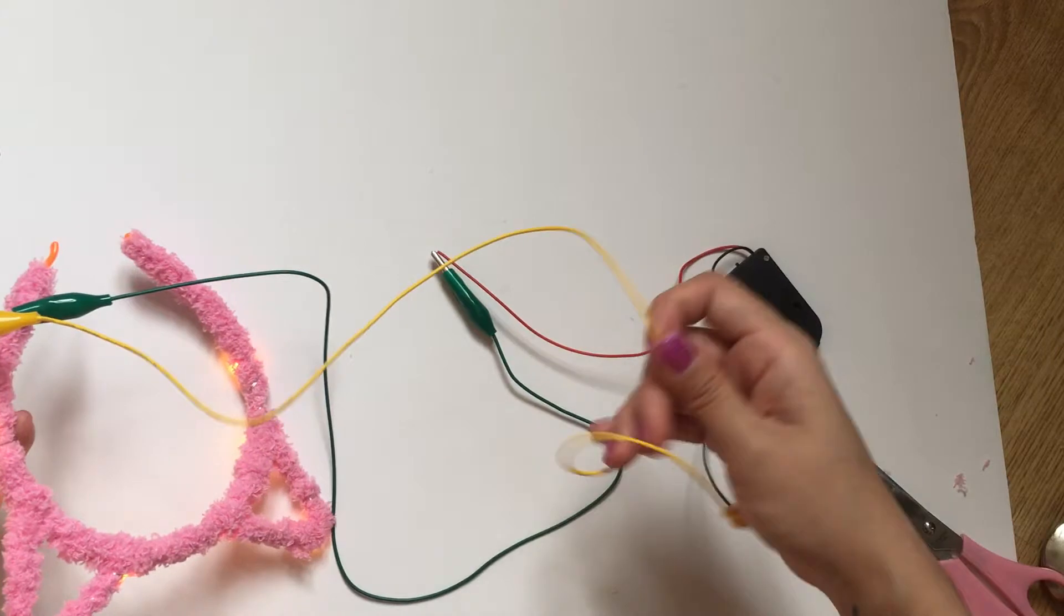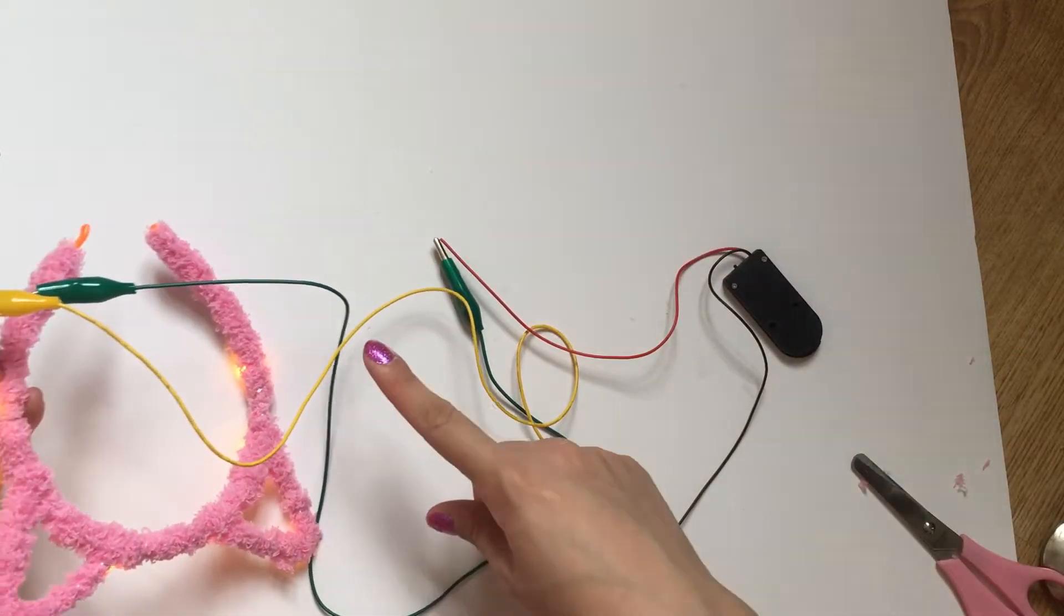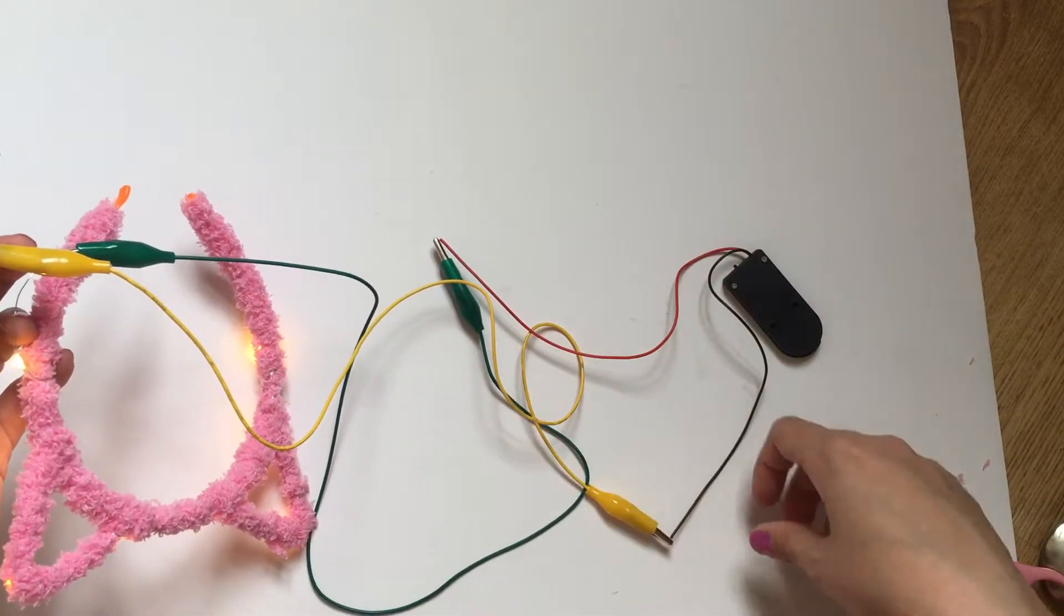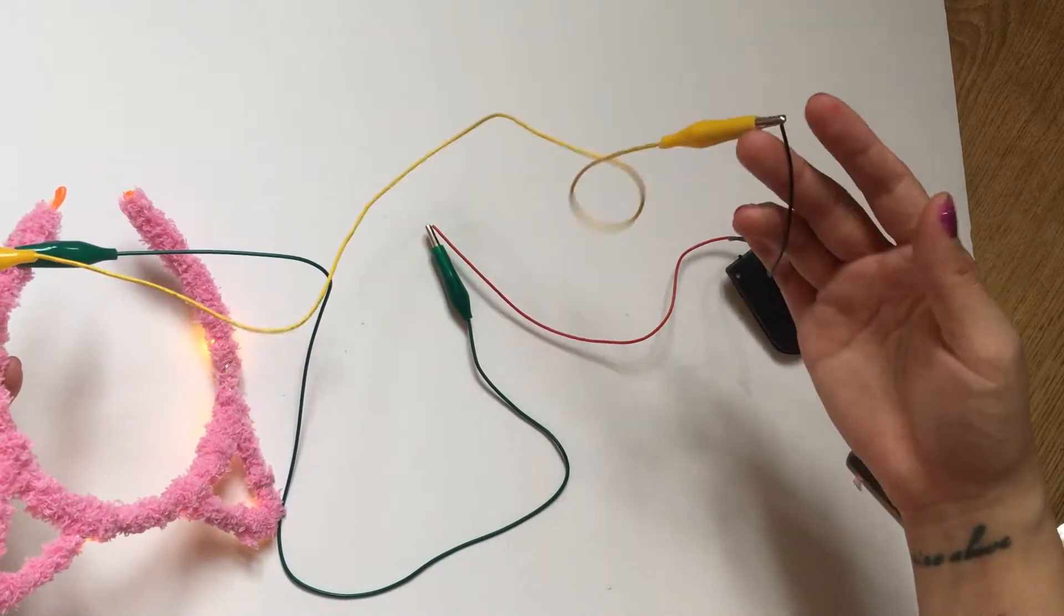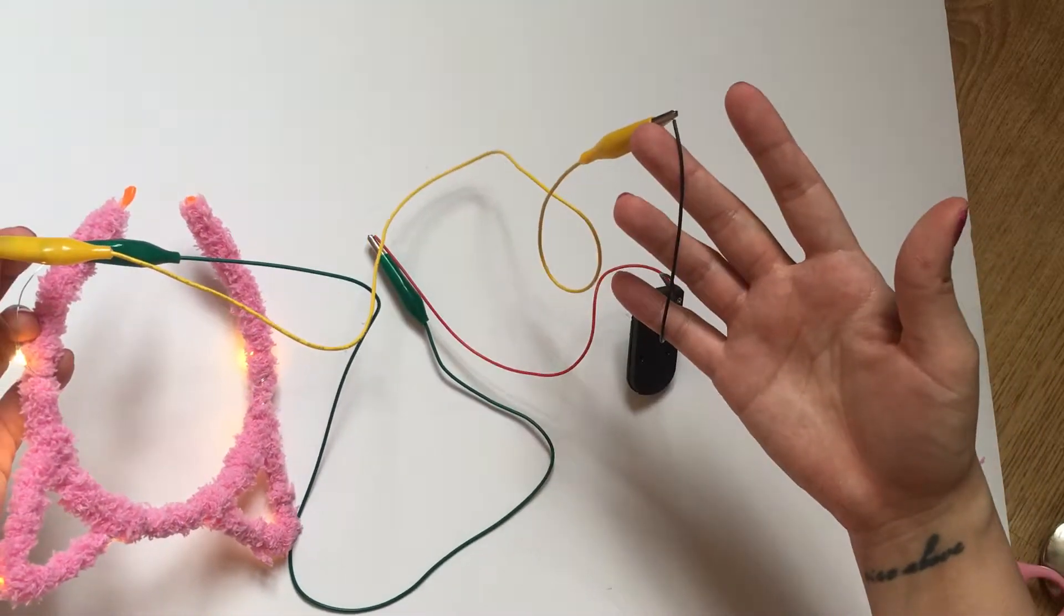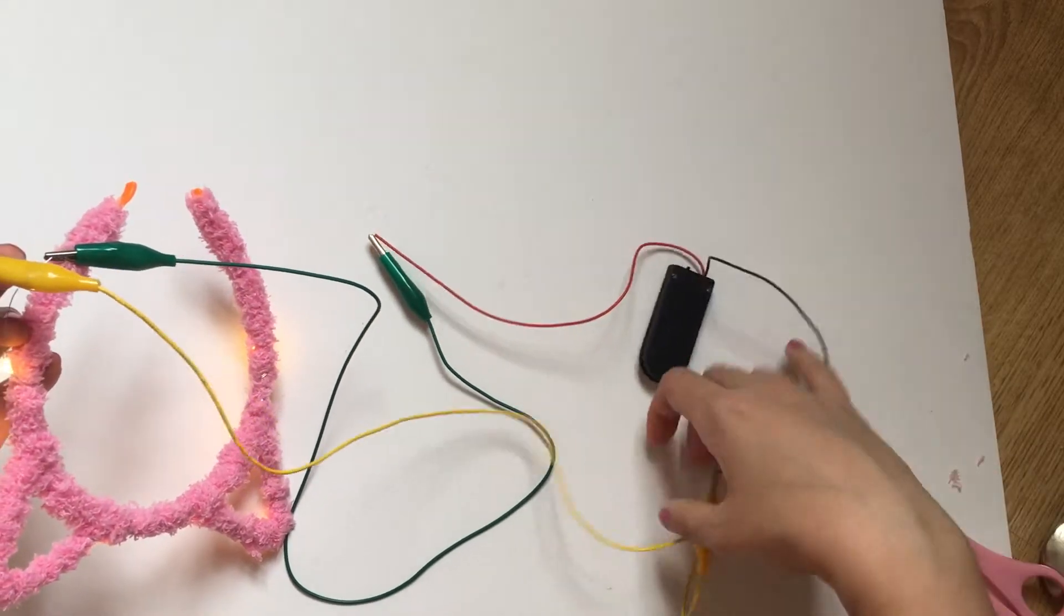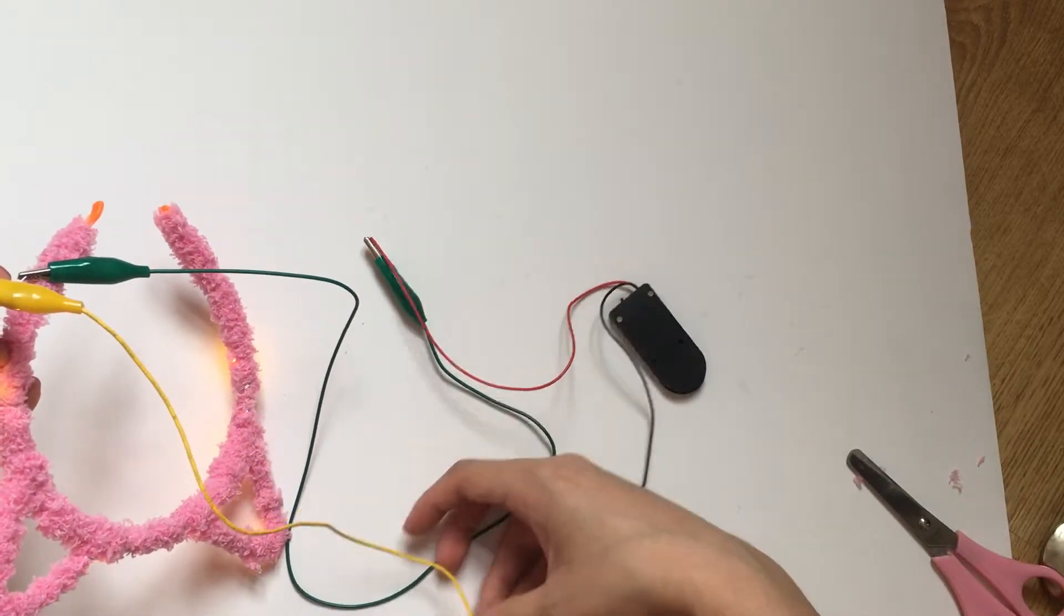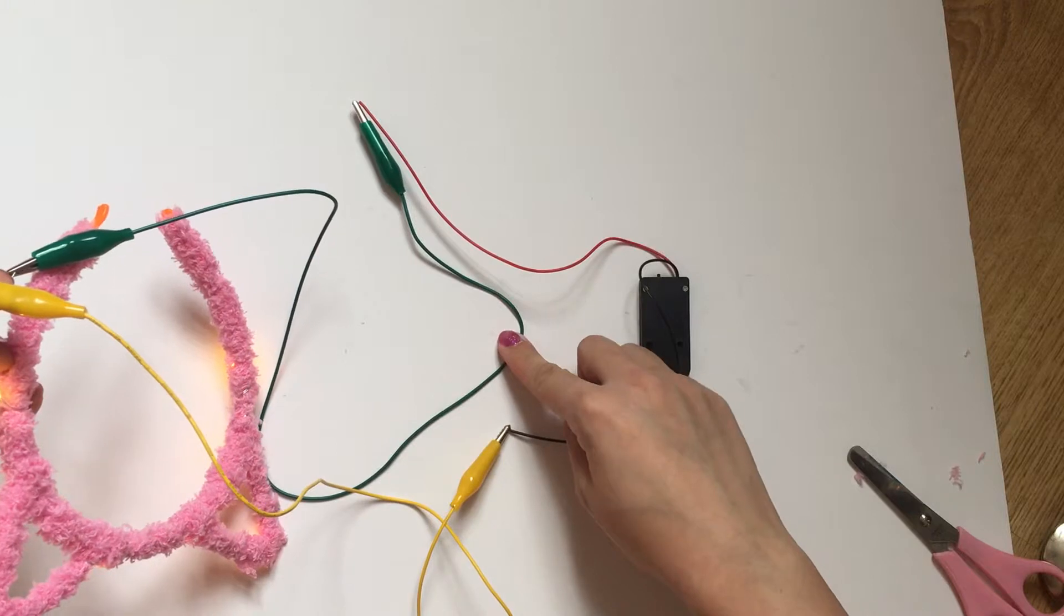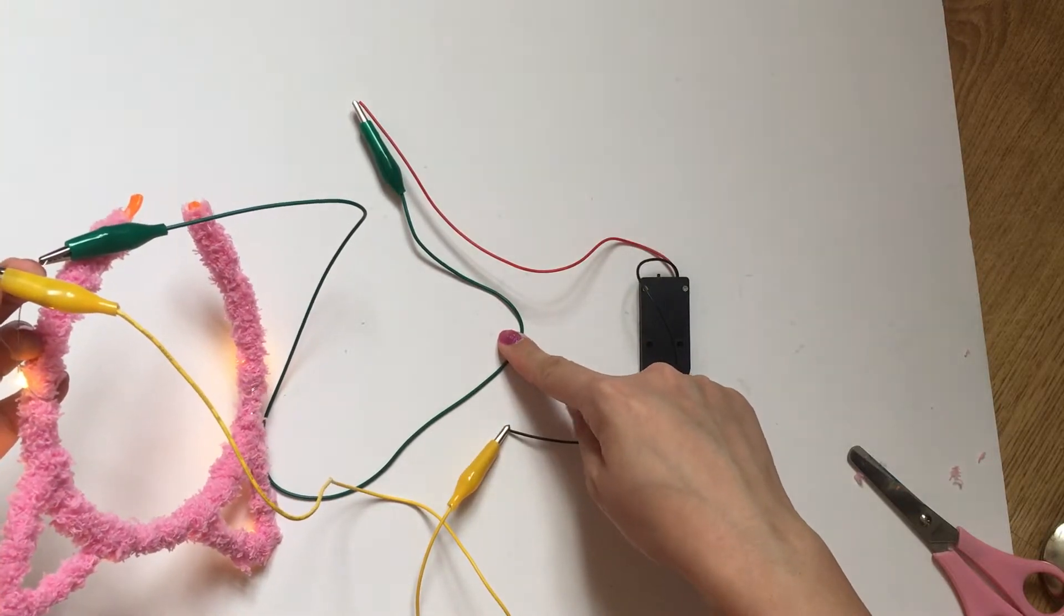The yellow crocodile clip is attached to the black wire of the battery holder. This means that this yellow crocodile clip is the negative terminal. And therefore, the opposite color, which is green, is the positive terminal.